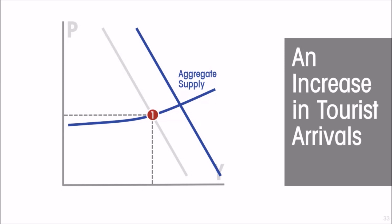All those businesses are going to try to increase their supply to meet the increased demand from tourists, so the economy expands. If the tourism sector is a large enough share of the economy, that leads to an overall economic boom. This would be the case in any economy with a significant tourism sector, like Kenya, Mexico, or Barbados. So the economy experiences a boom and output rises.